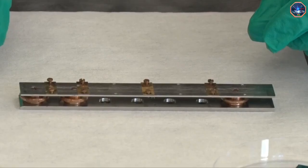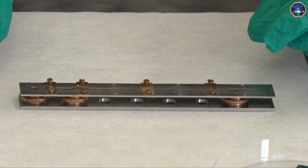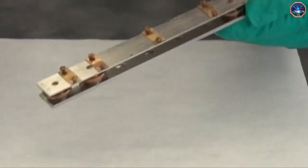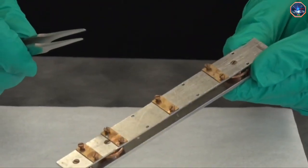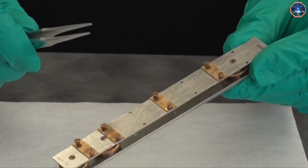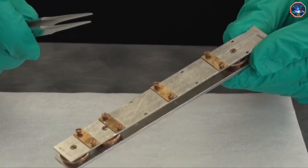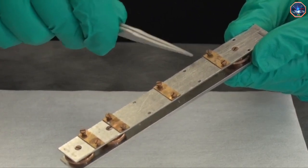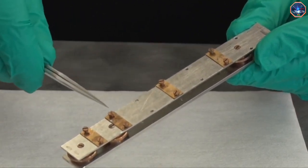Sample holders for different XPS systems will be slightly different, but the same concepts apply for all of them. We want to do two things. First, adhere the sample to the sample holder, and second, try to make good electrical contact between the top surface of the sample and the sample holder. These small copper bars can be used for both tasks.